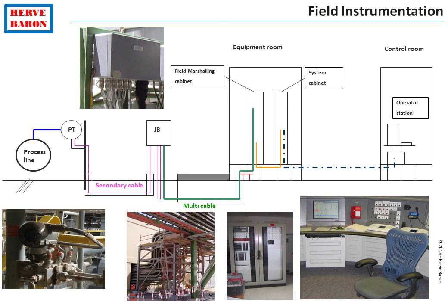This synoptic shows all instrumentation and automation hardware, including instruments connected to the process lines, secondary cable connections of instruments to junction boxes, the connection of junction boxes by multi-core cable to the marshalling cabinet in the instrumentation equipment room, and the fiber optic connection from the instrumentation equipment rooms to the control room.